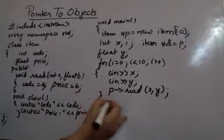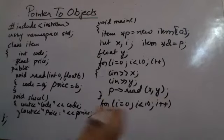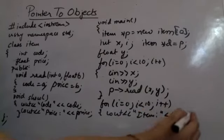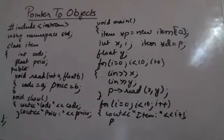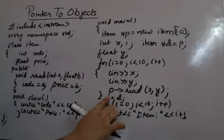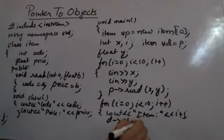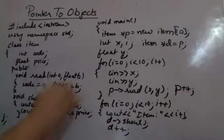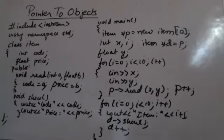To show the data, I run another for loop from i=0 to i<10, printing the item number and calling 'p->show'. Since p was incremented during reading, I can either reset it using 'p = d' to bring it back to the base address, or use d directly which still points to the base. I call 'd->show' and then do d++ to move to the next object. This concludes the main function.